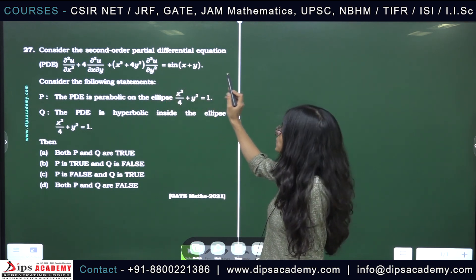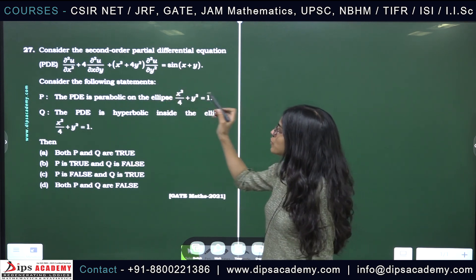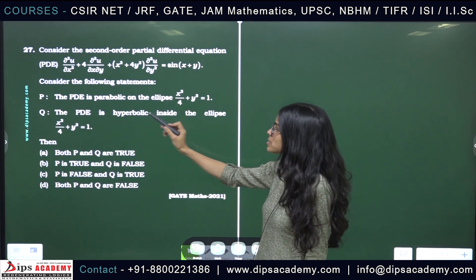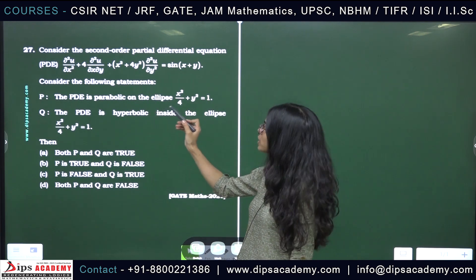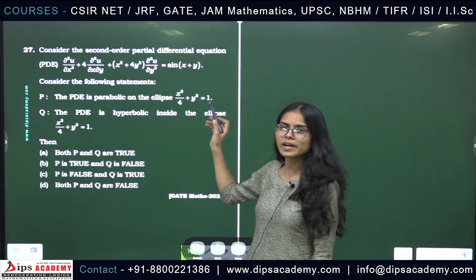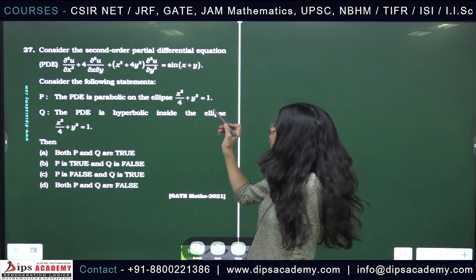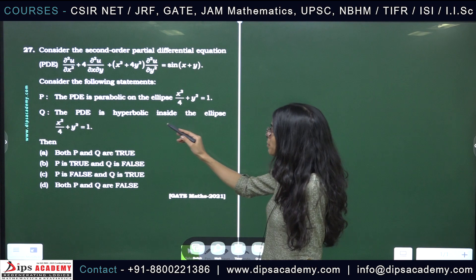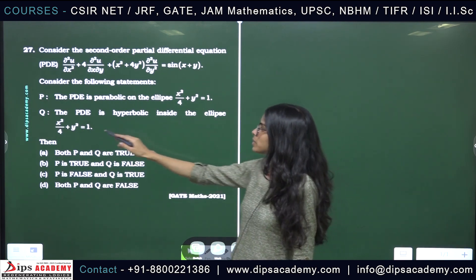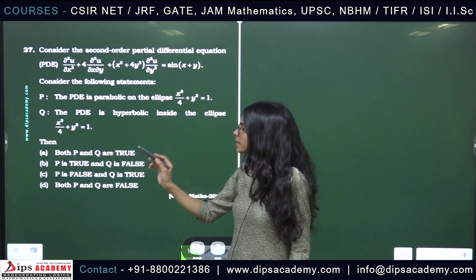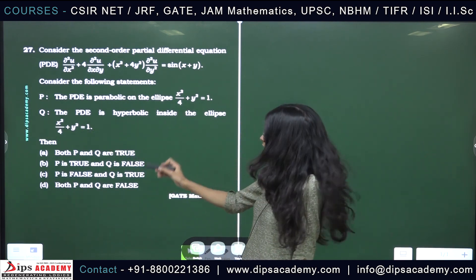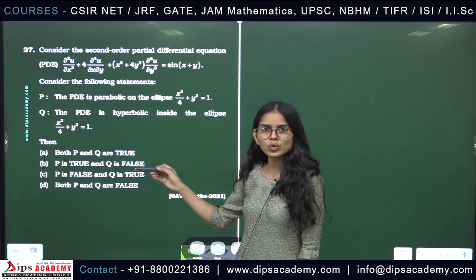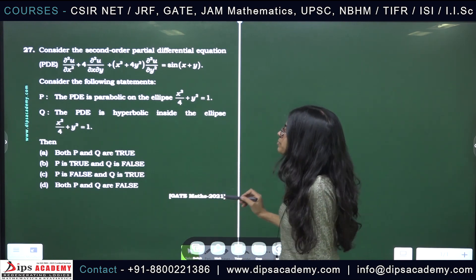equals sine(x + y). We have two statements: Statement P says the PDE is parabolic on the ellipse x²/4 + y² = 1, and Statement Q says the PDE is hyperbolic inside that ellipse. We have to choose which of the given options are correct.